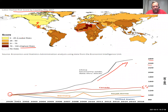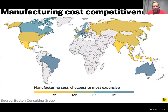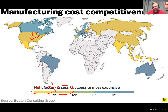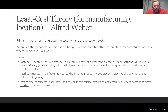Looking at manufacturing cost competitiveness, the US actually ranks well — in the second tier. Even though labor costs are higher here, overall manufacturing costs are competitive, largely because of high productivity per worker in the US. This means companies may choose to build facilities in the US rather than going overseas.